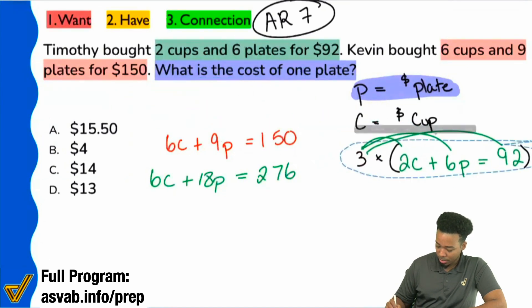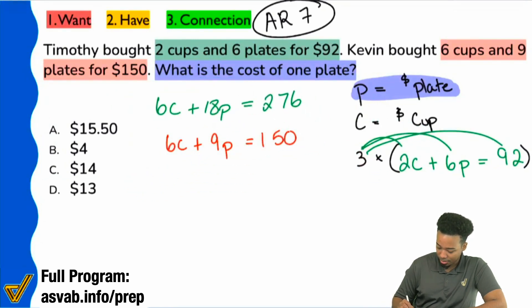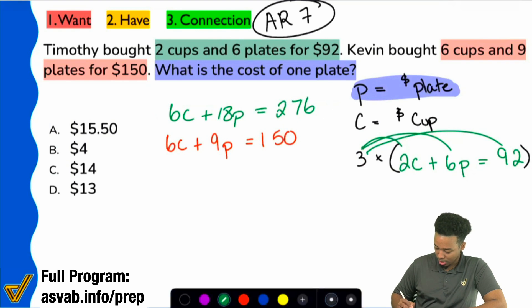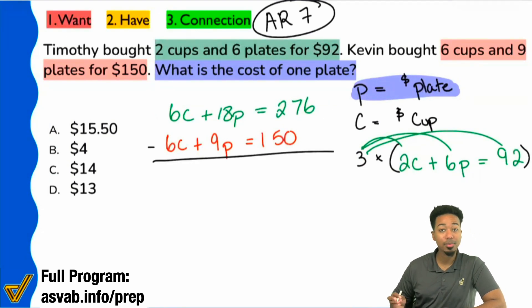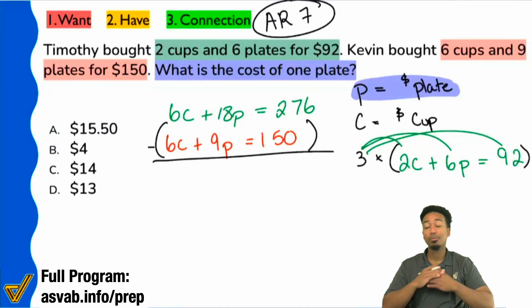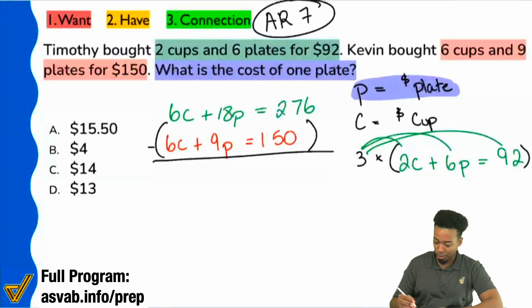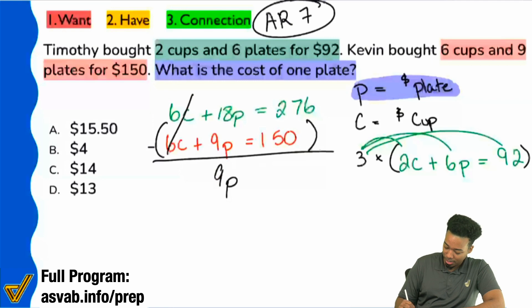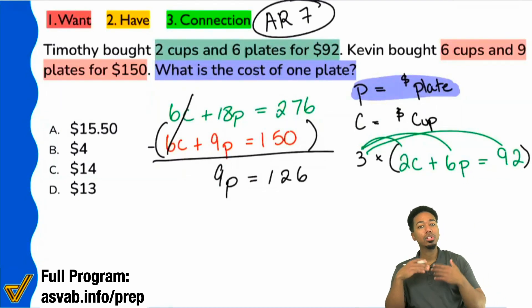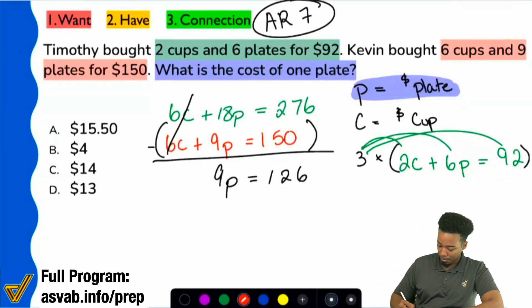So now that I have that, this is going to give me a really good advantage because what I can do now is I can just subtract these equations. I can subtract these as is, and I'm good. Just make sure you're putting a parentheses here to show that you're subtracting one equation from the other, perfectly legal to do. And you'll see that you'll eliminate the 6C's. Then 18P minus 9P is 9P. 276 minus 150 is going to be 126. So look at how smooth that can be.